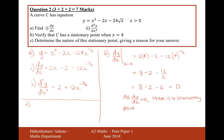To determine the nature of the stationary point, I substitute into the second derivative. The second derivative evaluated at x equals 4 is going to be 2 plus 12 times 4 to the minus 3 over 2. You don't need to work out exactly what 4 to the minus 3 over 2 is — you know it's going to be positive, so it's 2 plus 12 times something positive. Since the second derivative is positive, we have a minimum turning point. That's the answer to part C — 7 marks in total for question 2.